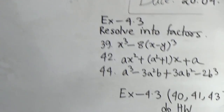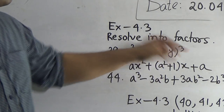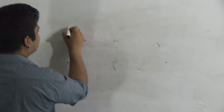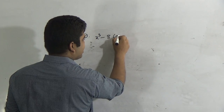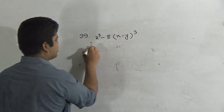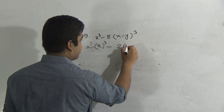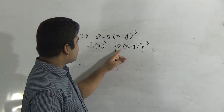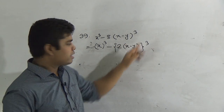That means some expressions are given and we need to resolve them into factors. Question 39 is: x³ minus 8 into (x minus y)³. We can write this expression as x³ minus [2(x minus y)]³. That means if we do cube of 2 we get 8, and if we do cube of (x minus y) we get (x minus y)³. Now notice, the a³ minus b³ formula is applicable here.